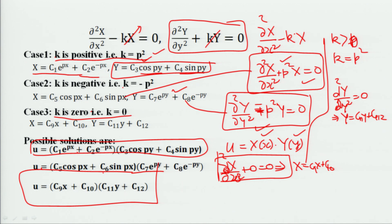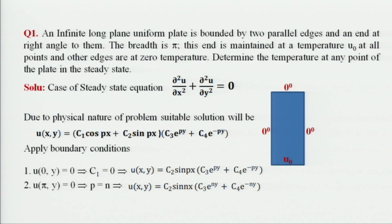So for a two-dimensional Laplace equation, the solution may be in the first form, the second form, or this third form. It all depends on which type of physical system we have. Out of these three possible solutions, whichever comparatively satisfies the physical nature of the problem, we apply that particular method.